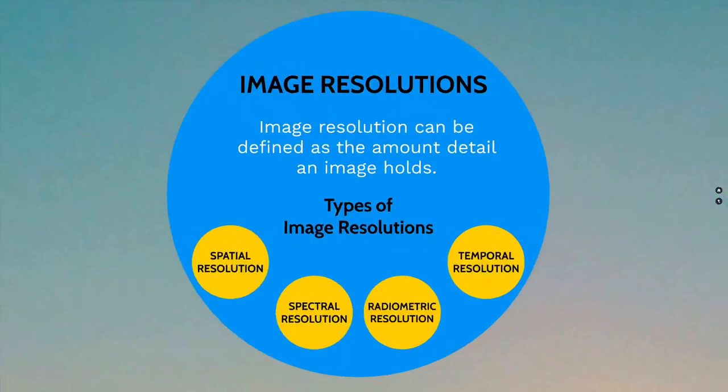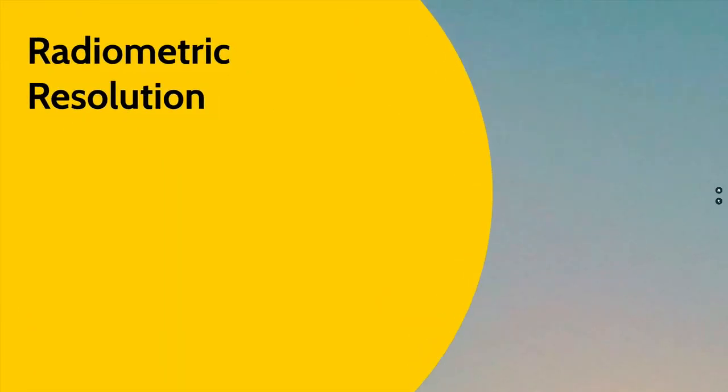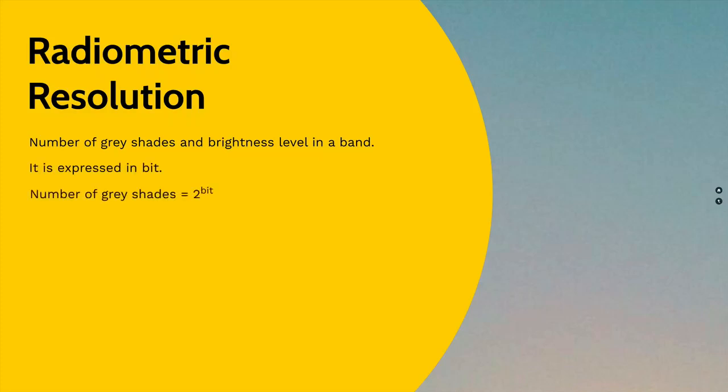Now let's move on to the next section: radiometric resolution. Radiometric resolution is defined as the total number of gray shades in a band. It accounts for the amount of information a single band can accommodate. It is expressed in units of bit.